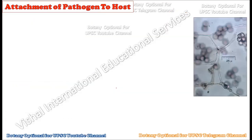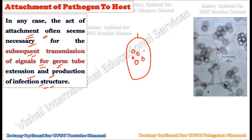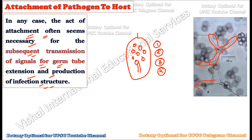In many cases, the act of attachment is necessary for subsequent transmission of signals to form the germ tube extension and the production of infectious structures. Once the spores are landed on the host plant leaf — whether they use mucilaginous sap, cutinase enzyme, or glycoproteins — this becomes the starting point of infection, and after chemical-level signaling, there will be formation of a germ tube.